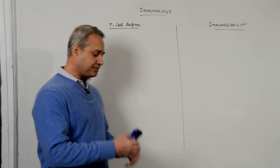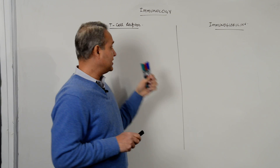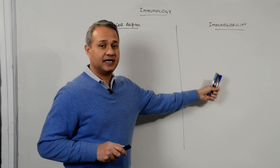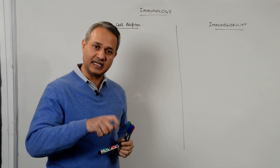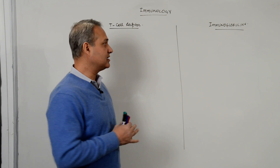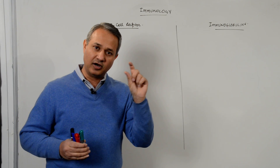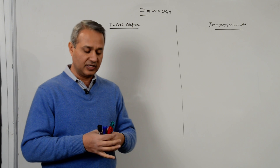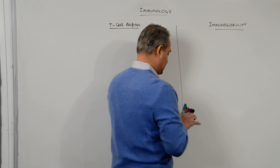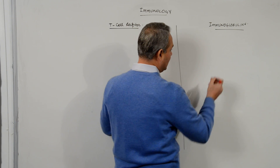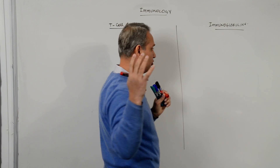Let us start. Instead of going straight to the T cell receptor structure, let us first understand the immunoglobulin structure itself. The reason is that the T cell receptor structure is actually part of the immunoglobulin structure. Immunoglobulins are made up of four chains — four peptide chains, four proteins.